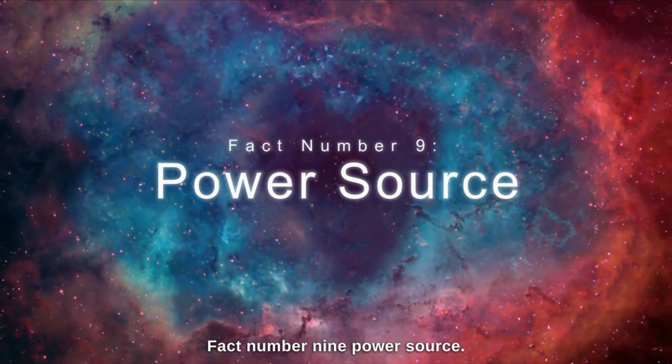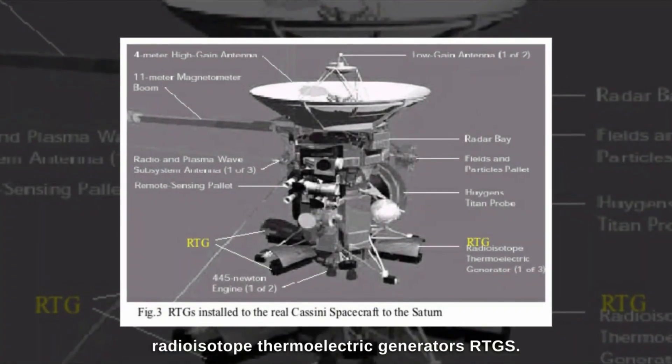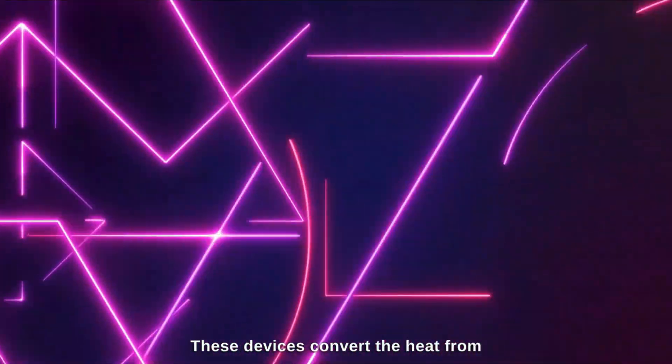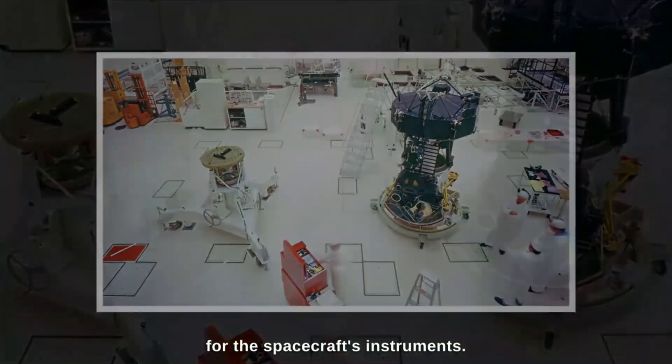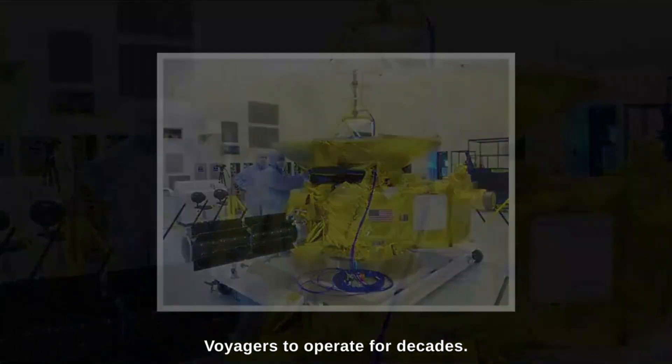Fact number 9. Power Source. The Voyagers are powered by radioisotope thermoelectric generators, RTGs. These devices convert the heat from radioactive decay into electricity, providing power for the spacecraft's instruments. These RTGs have allowed the Voyagers to operate for decades.